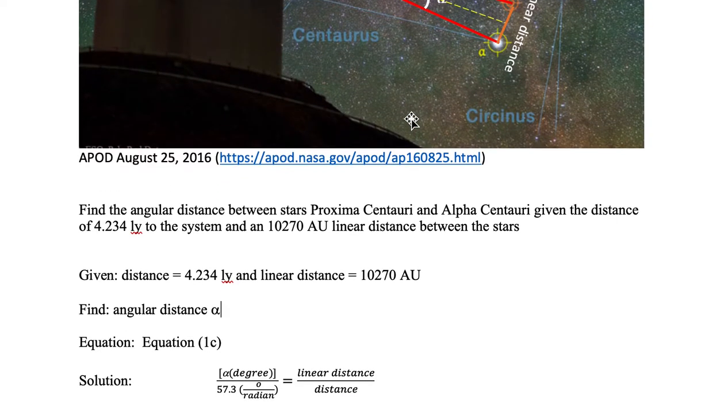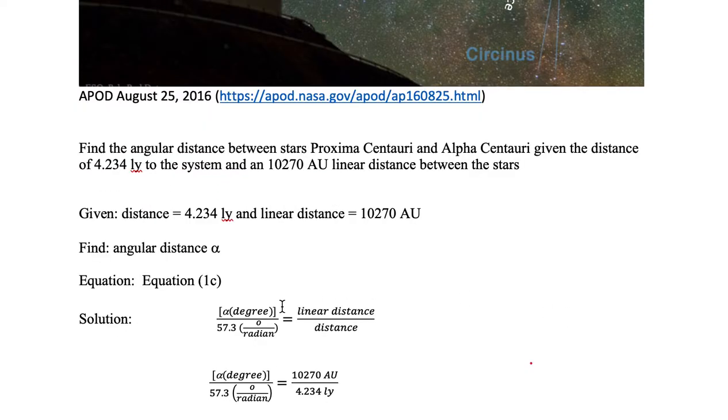So let's substitute in. So we keep the left-hand side of the equation the same. We leave it alpha in terms of degrees divided by the conversion 57.3 degrees per radian. And then we substitute on the right-hand side. The linear distance is 10270 AU and the distance to the star system is 4.234 light years.